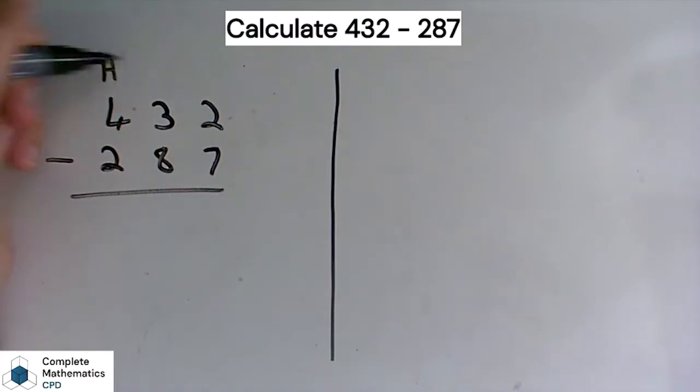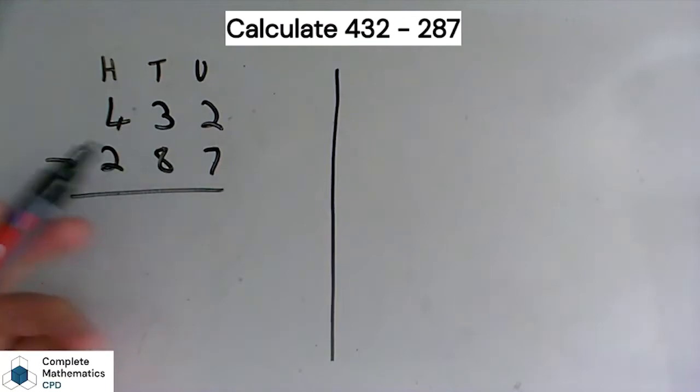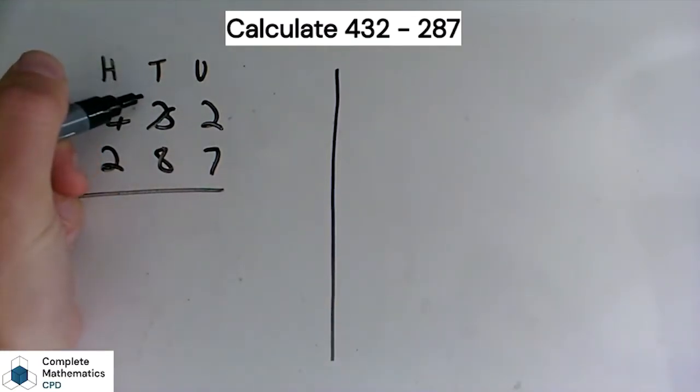So our hundreds, tens, and our units. Now 2 minus 7, because 7 is greater than 2, we'll exchange from this 3 here. These 3 tens gives us an extra 10 units there. 12 minus 7 is 5. Same problem here, so we'll exchange this 100 for 10 tens, and 12 tens minus 8 tens is 4 tens.